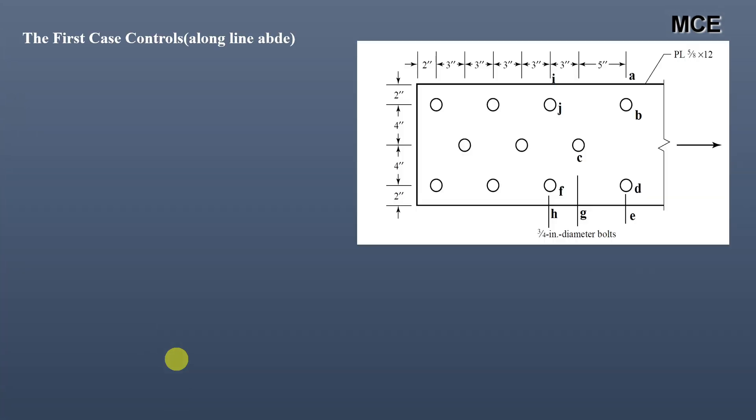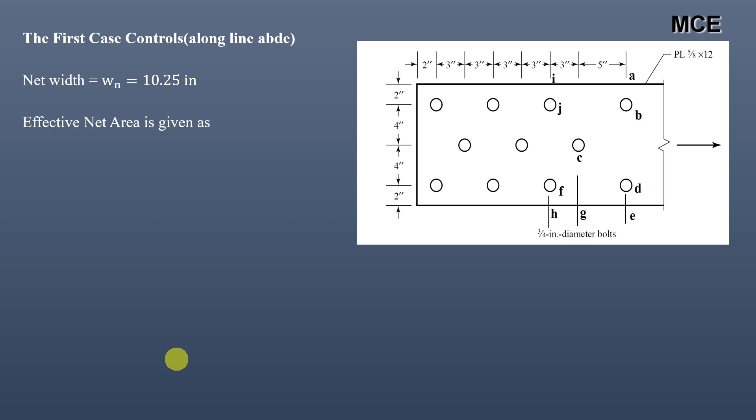Out of all the failure lines, the first case along line A-B-D-E controls and governs the design with a net width of 10.25 inch. The effective net area for this plate is thickness × net width = (5/8) × 10.25 = 6.406 in².